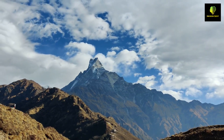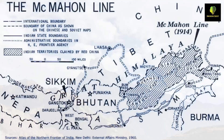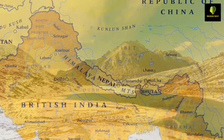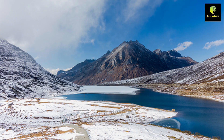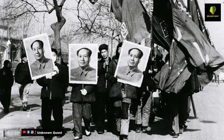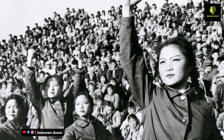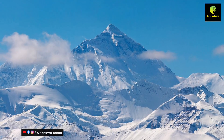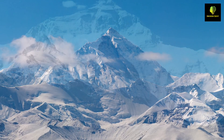The McMahon Line was initially seen as the boundary between British India and Tibet, and China was not a party to the treaty. However, when India gained independence in 1947 and China underwent a communist revolution in 1949, the McMahon Line became the border between India and China.